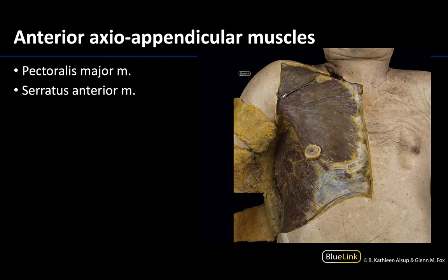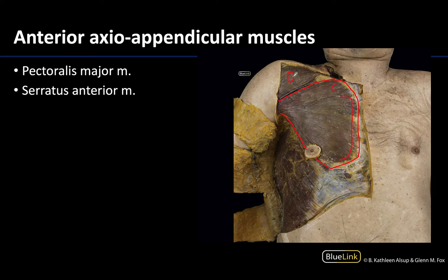Let's start with the pectoralis major, which I'm going to outline here. We don't see all the way to its distal attachment on the humerus, but that is where it extends. This is actually the deltoid, which we'll talk about with the intrinsic shoulder. The pectoralis major is quite a large, fan-shaped muscle. It has two different heads: a clavicular head and a sternocostal head associated with the costal cartilages. Its distal attachment is on the proximal humerus near the intertubercular sulcus. The only muscle it can be confused with is the deltoid, which forms more of the cap of the shoulder.